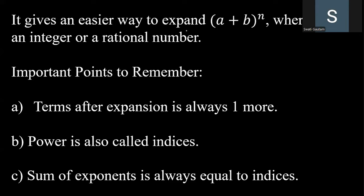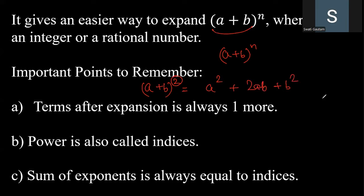Now let's discuss the key points to understand about the expansion of a binomial expression with a finite power. Taking the example of a plus b raised to the power 2, where n equals 2: the expansion is a squared plus 2ab plus b squared, which has 3 terms. So when the power is 2, there are 3 terms; when n equals 1, there are 2 terms. The number of terms is always one more than n. Also, power and indices mean the same thing.